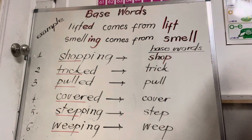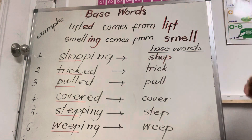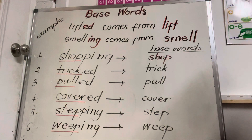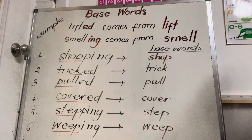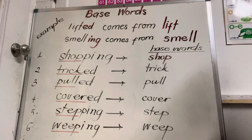So let's do it together. I will read the word and you have to say the base word. Are you ready? Shopping — shop. Treat. Trick. Pool — pool. Covered — cover. Stepping — step. Weeping — weep. Okay, one more time.